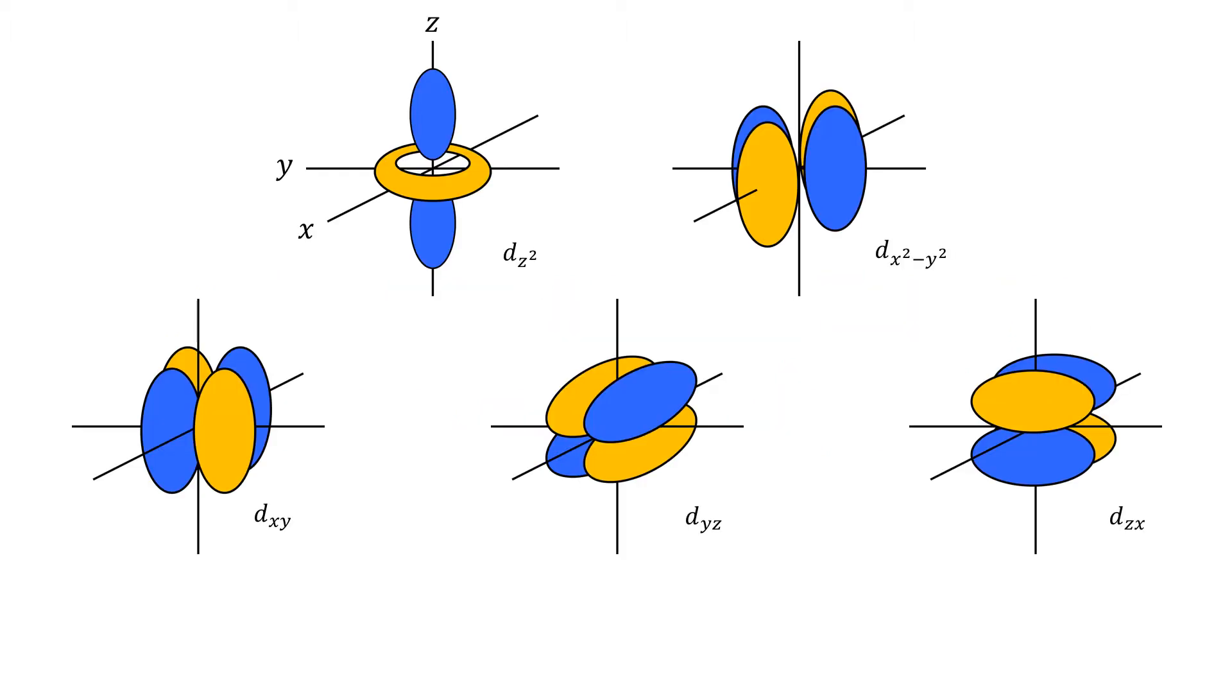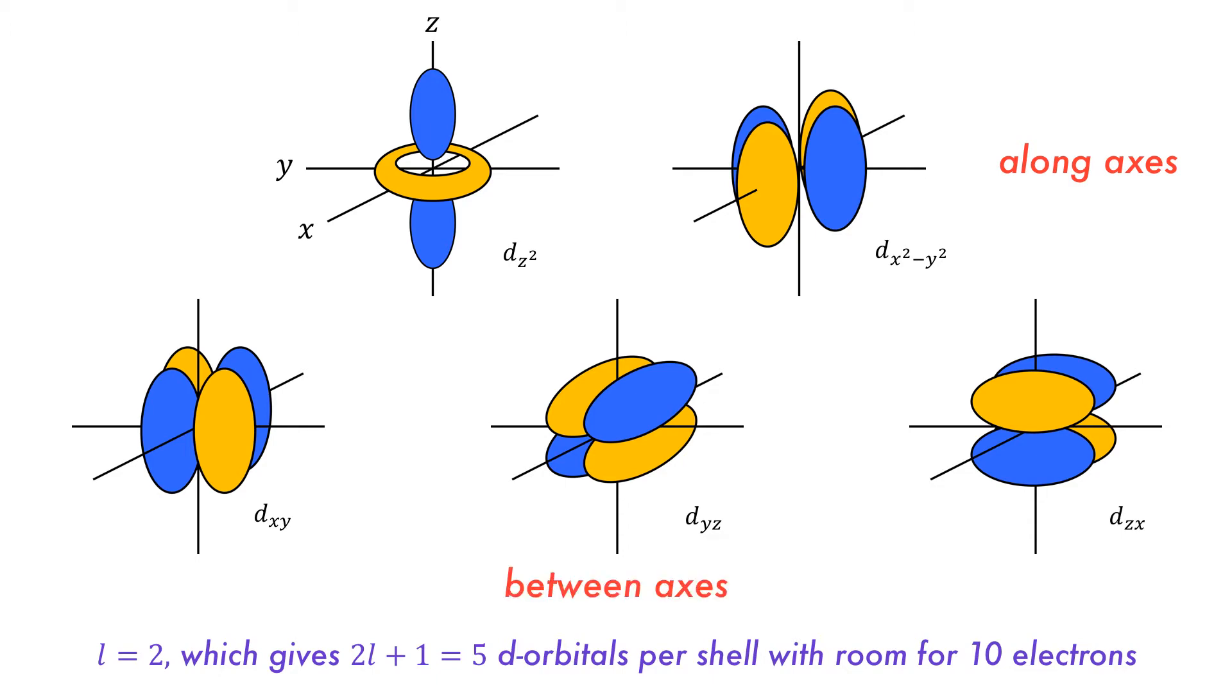This is what the d orbitals look like. They are defined as having an angular momentum quantum number of 2, which gives 2l plus 1 or 5 orbitals which can contain up to 10 electrons. These d orbitals are pointed along or between the Cartesian axes. The top orbitals point along the Cartesian axes and the bottom orbitals point between them.